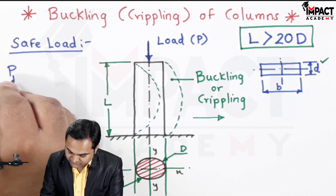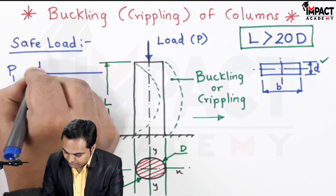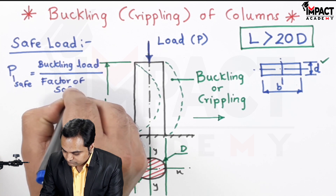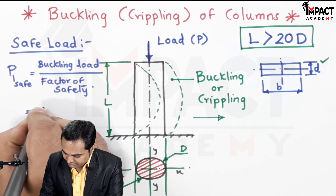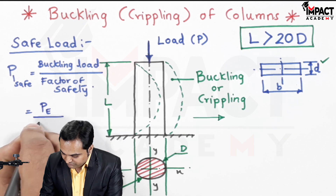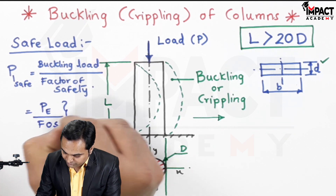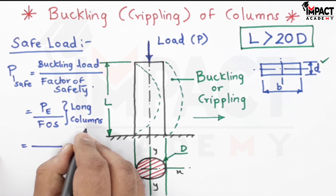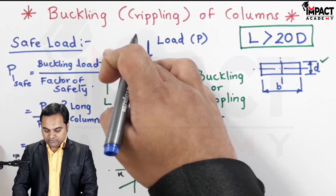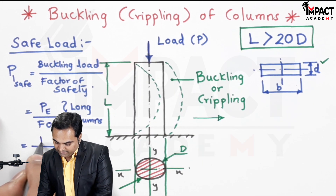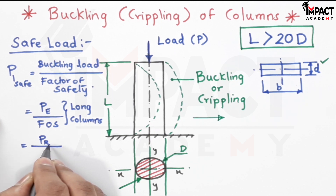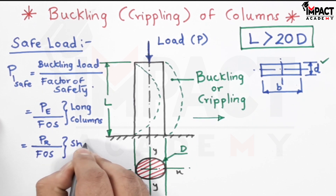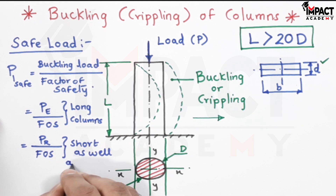Safe load, that is P_safe, is the buckling load or crippling load divided by the factor of safety. This buckling load may be Euler's load, P_e, divided by the factor of safety — Euler's formula is used for long columns, for lengths greater than 20 times the diameter. Alternatively, Rankine's load P_r divided by the factor of safety is used for short as well as medium length columns.